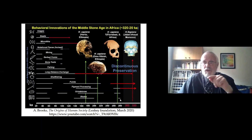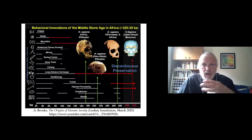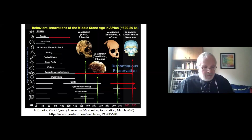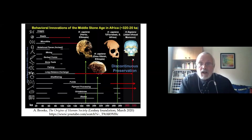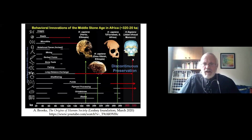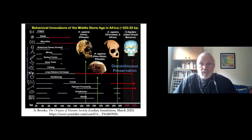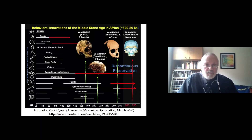There is also the development of points, which from the point of view of cognition are extremely complex to make, followed shortly afterwards by the earliest blades we have — this too shows a great deal of cognitive development. A great deal of this is discontinuous, and we do not have all of it all the time. The Middle Stone Age in Africa, as Alison Brooks notes, runs from 320,000 to around 50,000 years ago, after which we're dealing with the later Stone Age.